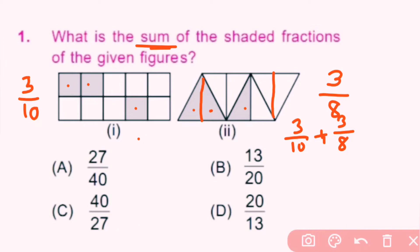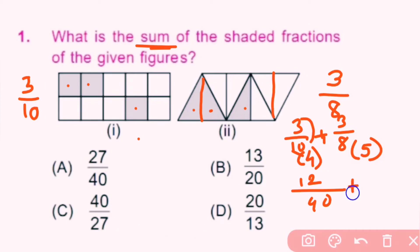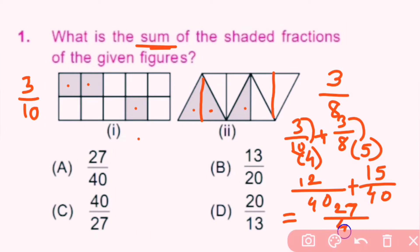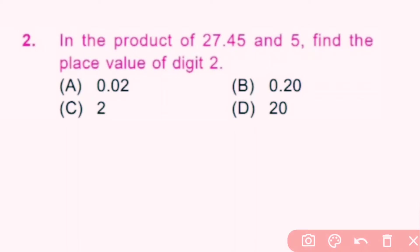We will make the denominators the same by finding the LCM of 10 and 8. LCM is 40. We multiply by 4 for the first fraction and by 5 for the second. So 3 into 4 is 12 and 10 into 4 is 40, plus 3 into 5 is 15 and 8 into 5 is 40. 12 plus 15 is 27, so the sum is 27 by 40. A is the correct answer.